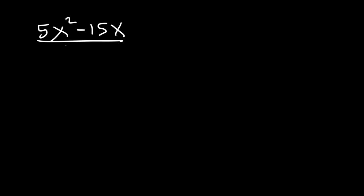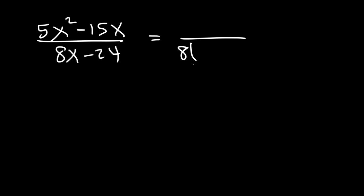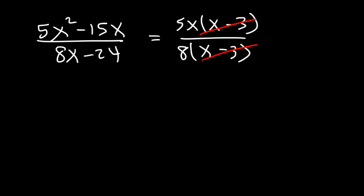Now let's try: 5x squared minus 15x divided by 8x minus 24. In the denominator, we can take out the GCF, which is 8. 8x divided by 8 is x, and negative 24 divided by 8 is negative 3. In the numerator, we can take out 5x. 5x squared divided by 5x is x, and negative 15x divided by 5x is negative 3. We can cancel the common term x minus 3, so the final answer is 5x divided by 8.